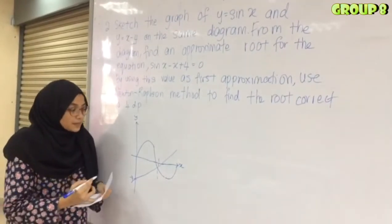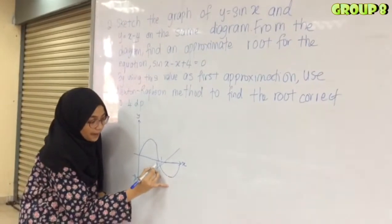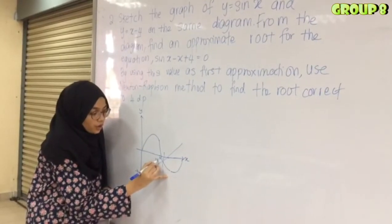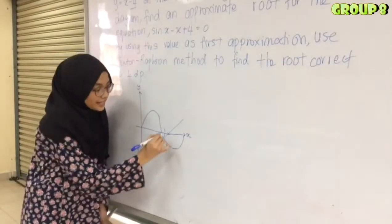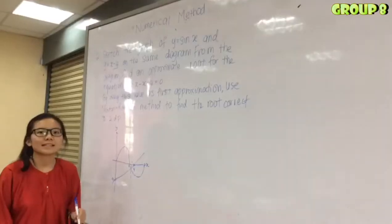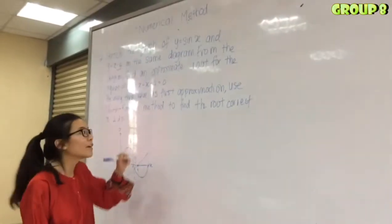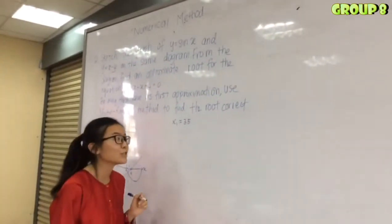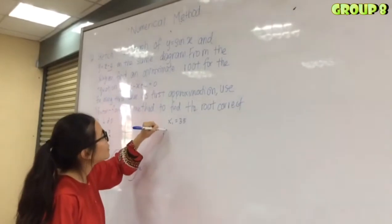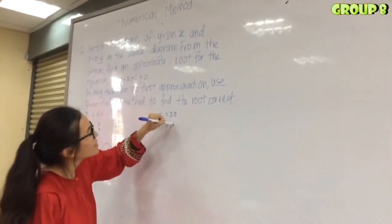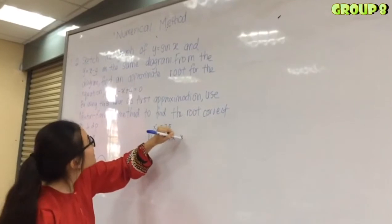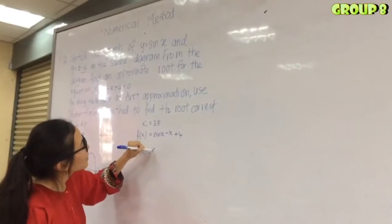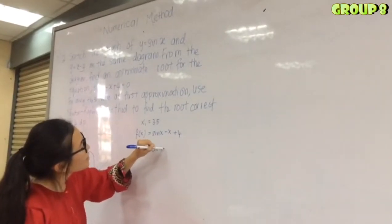The approximate root is 3.5, because pi is approximately 3.14 and the intersection appears near 3.5, which is between pi and 4. So the initial value x₁ = 3.5. For Newton-Raphson, f(x) = sin x minus x minus 4, and differentiating gives f'(x) = cos x minus 1.